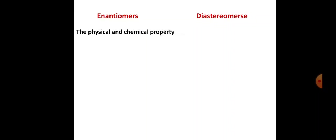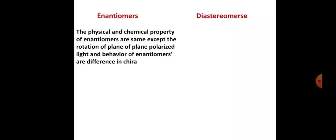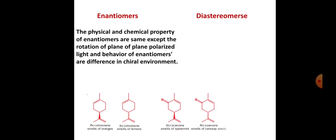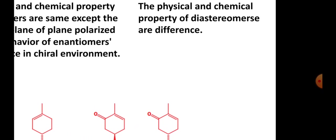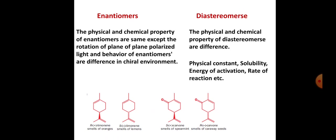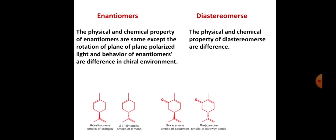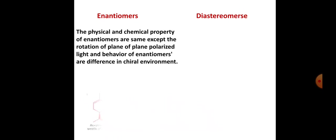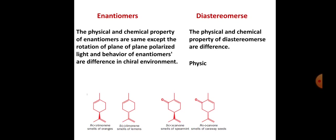The second difference: the physical and chemical properties of enantiomers are the same, except for the rotation of plane polarized light and their behavior in a chiral environment. Examples are R-limonene and S-limonene, and also S-(+)-carvone and R-(-)-carvone — their smells are different. In the case of diastereomers, the physical and chemical properties are different — physical constants, solubility, energy of activation, and rate of reaction are all different.